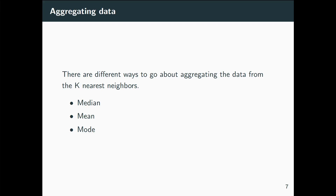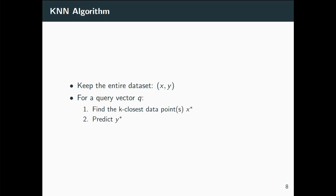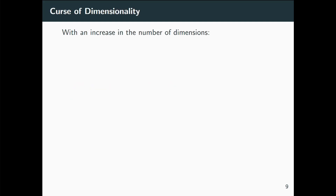For aggregation, once you have data from the K nearest neighbors, you could take a median or mean — more specific to regression. For classification, you take the mode or majority class. To summarize the KNN algorithm: it's a trivial algorithm — keep the entire training dataset (lazy evaluation), and for every query vector q (test point), find the K closest data points. Then aggregate them by taking mean, median, or mode to predict y.